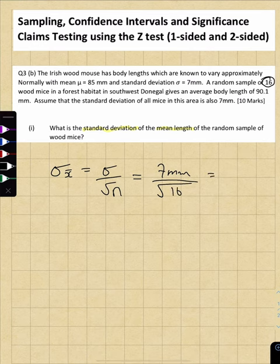So bang that into the calculator: seven divided by the square root of 16, which is four. It's seven over four, or 1.75, and our units are millimeters.